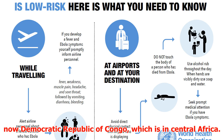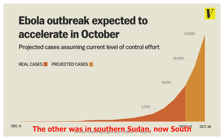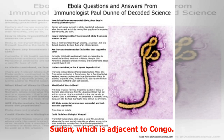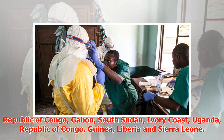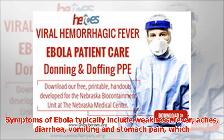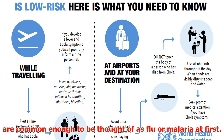The first human outbreaks occurred in 1976: one in northern Zaire, now the Democratic Republic of Congo in central Africa, and the other in southern Sudan, now South Sudan, which is adjacent to Congo. Fatal Ebola outbreaks among humans have been confirmed over the last few decades in: Democratic Republic of Congo, Gabon, South Sudan, Ivory Coast, Uganda, Republic of Congo, Guinea, Liberia, and Sierra Leone.